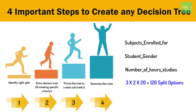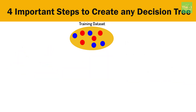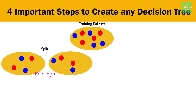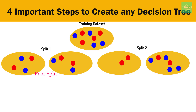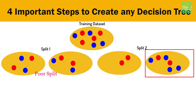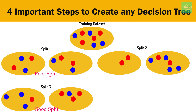The best split is the one that creates the most homogeneous population. In this example, the training data has red data points and blue data points. A good split will result in more homogeneity within the child node than the parent node. The first split is a poor one because there is no increase in homogeneity in the child nodes. The second split results in a perfectly homogeneous child node, however that node has a very small proportion of records, and the large population is still very heterogeneous — hence it is a poor split too.